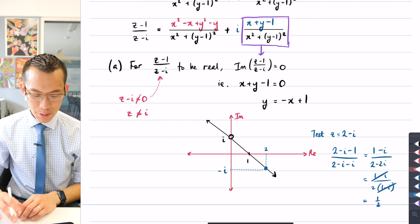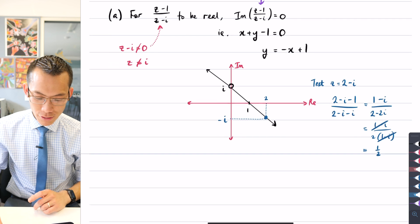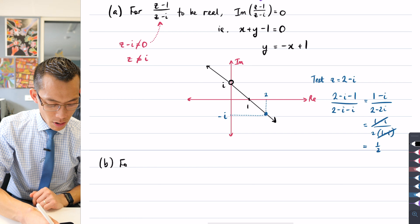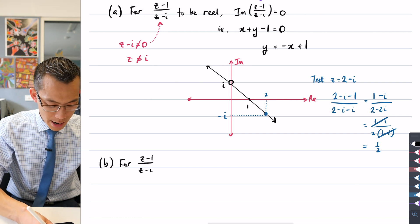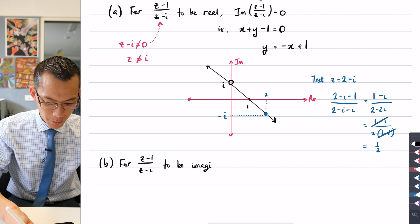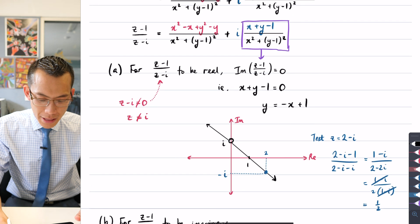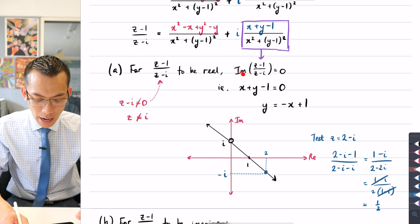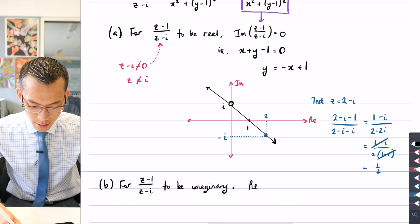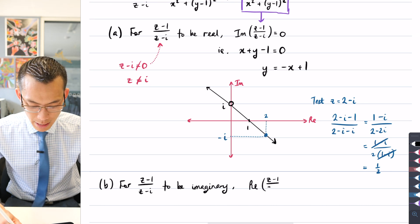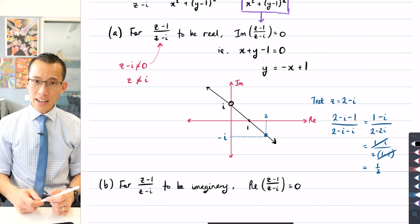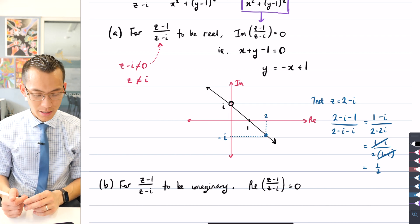So that was part A for it to be real. Now I want to do part B, which is for it to be imaginary. For z minus 1 over z minus i to be imaginary, we can use the same kind of logic that we employed before, which is to say, I want the real component over here, I want that to be equal to zero. The real part of z minus 1 over z minus i, that has to be definitely equal to zero. But this is not the only thing you must consider.